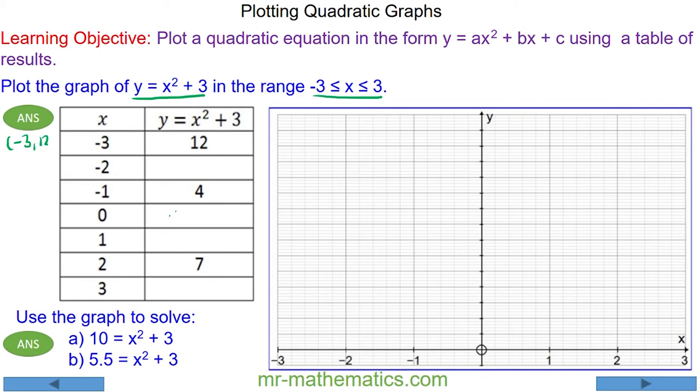We've got the coordinate when x equals negative 3 and y equals 12. We're going to work out the value of y when x is positive 3, so 3 squared plus 3. 3 squared is 9, 9 plus 3 makes 12. So the coordinate pair would be 3 and 12. So we know the y-axis will go up to 12.